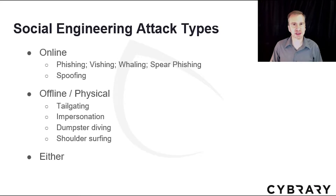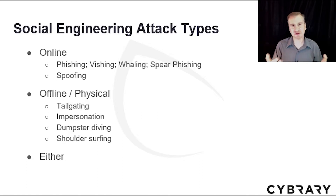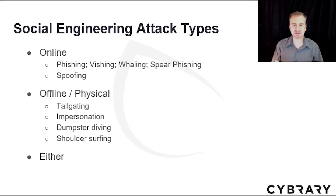Social engineering can occur online and offline. Online includes phishing, vishing, and spoofing. Offline or physical attacks are tailgating, impersonation, dumpster diving, and shoulder surfing. Some attacks combine them. Let's go into the details of each.